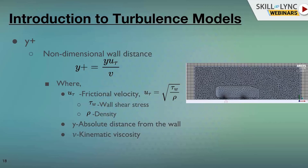After running the simulation, go and plot the y-plus and cross-check that it is between 30 and 300. If in some areas it is coming down to one or two, or in some areas going above 300, rework the mesh in those areas and run the simulation again to correct the y-plus. That is the significance of y-plus — it gives an idea of placing the first layer height based on the turbulence model you are going to use.